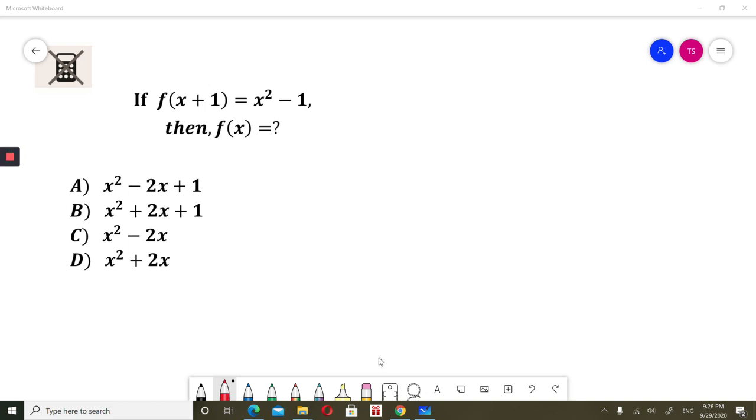If f of x plus 1 equals x squared minus 1, then f of x equals: A) x squared minus 2x plus 1, B) x squared plus 2x plus 1, C) x squared minus 2x, D) x squared plus 2x.